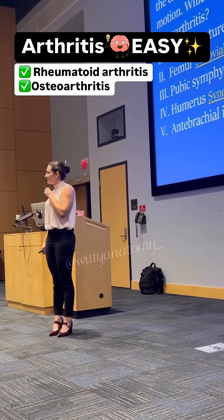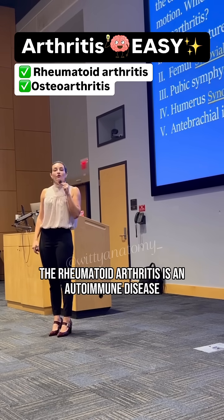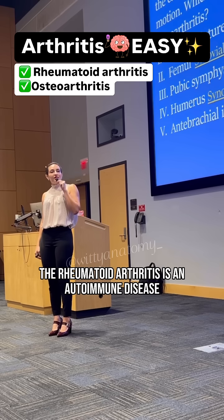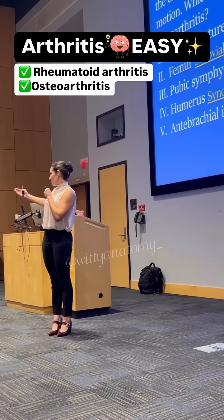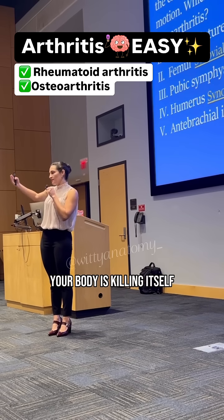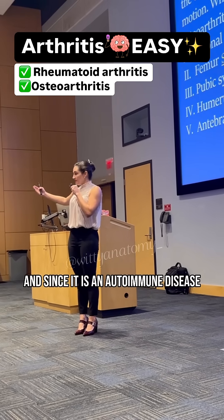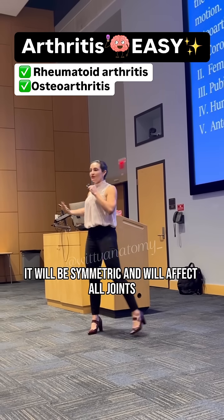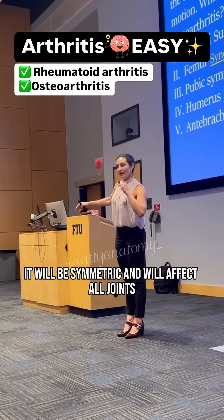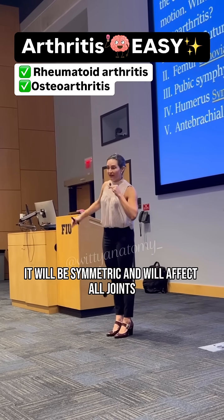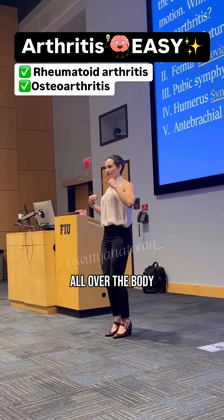Rheumatoid arthritis is an autoimmune disease — your body is killing itself. And since it is an autoimmune disease, it will be symmetric and will affect all joints all over the body.